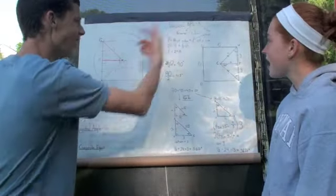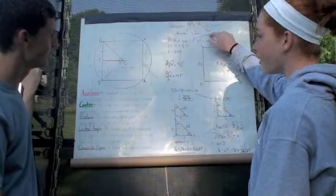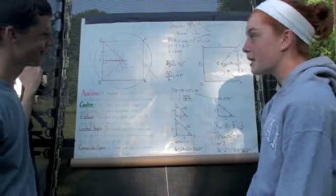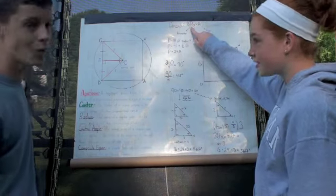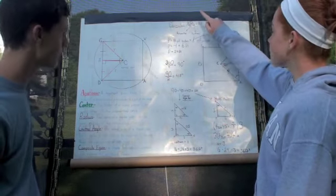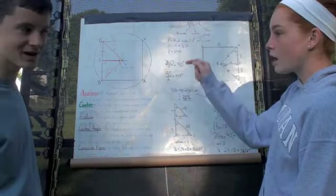And the formula! The formula says that this capital A means area, which is what we're looking for! And that area equals one half capital P, which means perimeter, times the lowercase a, which means apothem!